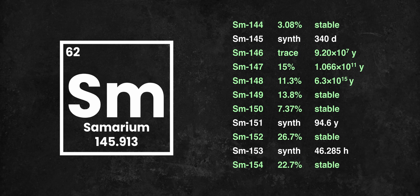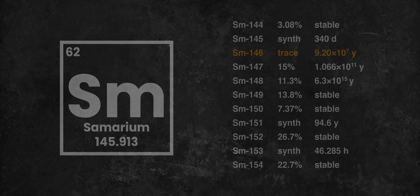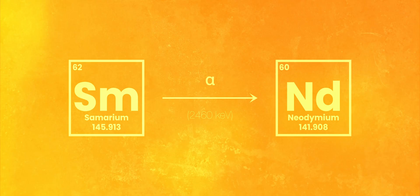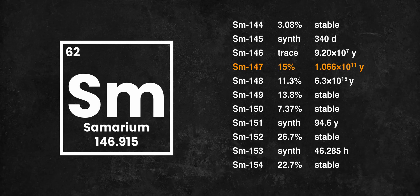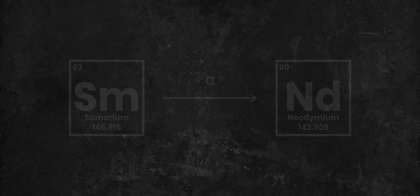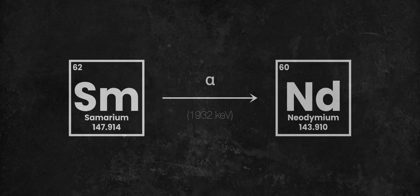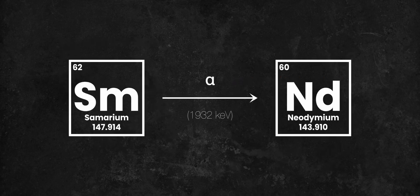In nature, Samarium has eight isotopes, out of which three are radioactive. Samarium 146 only exists in very small trace amounts and it decays into Neodymium 142 through alpha decay. Samarium 147 makes up 15% of natural Samarium and decays via alpha emission into Neodymium 143. The less abundant radioactive isotope, Samarium 148, has an abundance of 11.3% and just like the other two radioactive isotopes, it decays via alpha emission into Neodymium 144.